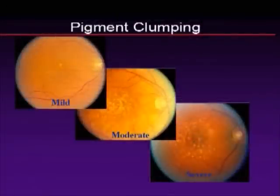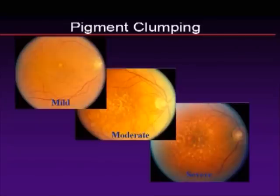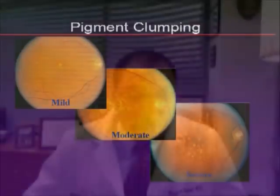Along with drusen, we can see pigment clumping. The drusen eventually affects the overlying RPE cells, and those RPE cells can deteriorate. If they deteriorate lightly, we see mild pigmentary changes or mild pigment clumping. More is moderate. And where you get more complete dropout or real hyperpigmentation, we call that severe pigment clumping. This also allows us to categorize and classify what type of macular degeneration you have.